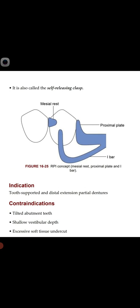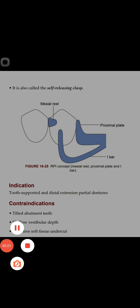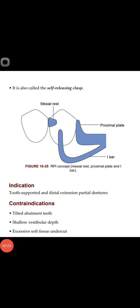The RPI concept consists of a mesial rest, proximal plate, and I-bar. Look at this diagram — there is a mesial rest on the mesial surface, a proximal plate, and the I-bar. Look at figure 16.25: the RPI concept shows the mesial rest on the mesial surface, proximal plate, and I-bar.